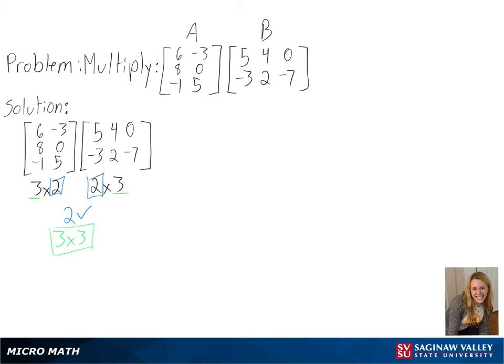To do this, we will be multiplying the rows from matrix A by the columns from matrix B, and then adding them as we go. To start, we will be multiplying the top row of matrix A by the columns in matrix B.